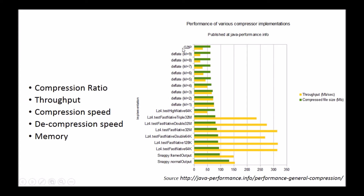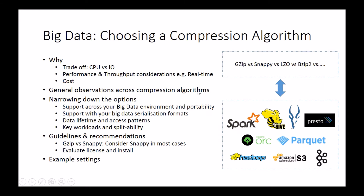Now that we've understood some of the parameters to keep in mind, let's narrow it down to specific recommendations for big data projects. The first thing to keep in mind is support across your entire big data real estate within your organization — not just one particular tool, but your entire stack. In some cases you have multiple Hadoop clusters, and if there's a need to keep it portable or move data between clusters, you're talking about a holistic view across your entire big data real estate.